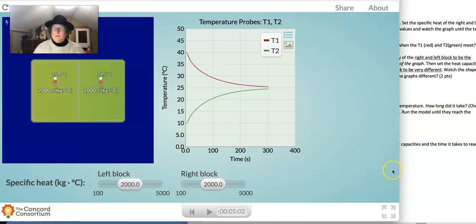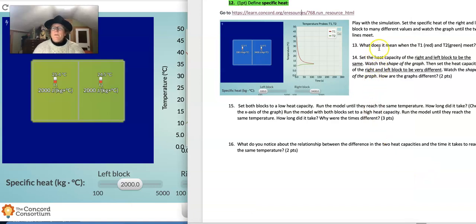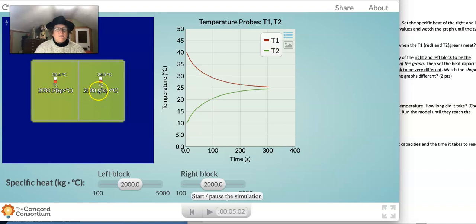So now let's go to the lab sheet here. What does it mean when T1, the red line, and T2, the green line, meet? Well, T1 is from the left block and T2 is from the right block. So when those lines meet, it means it's gotten to the same temperature. So here it's perfectly symmetrical. T1, the first block on the left, has cooled 15 degrees. And block T2 of the block on the right has increased 15 degrees. So they've come to the middle. They're sharing their heat equally because they both have the same heat capacity here. So we've already set the capacity to be the same. So we can see we get a very symmetrical line when they're the same.